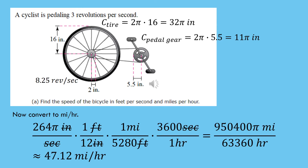It's a little difficult to picture how fast 264 pi inches per second is, so let's convert that to miles per hour using unit analysis. One foot equals 12 inches, so multiplying by the fraction one foot over 12 inches cancels the inches, leaving feet. But we want miles, not feet, so we use the fact that one mile equals 5,280 feet. Multiplying by one mile over 5,280 feet cancels the feet, leaving the unit of miles.